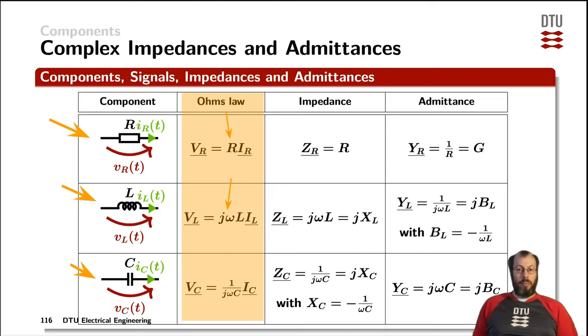In terms of the capacitors, we need to integrate the current passing through them along the time axis to get the voltage across them. The impedances of those three components are shown in this column. The impedance of a resistor only consists of a real part, the resistance itself.